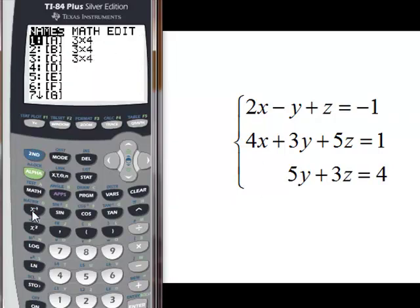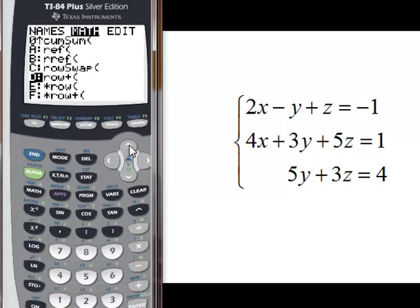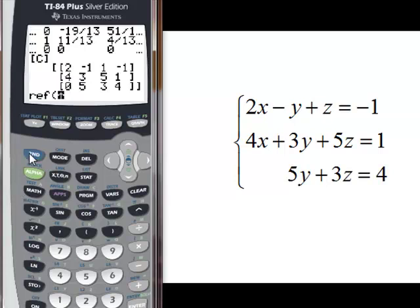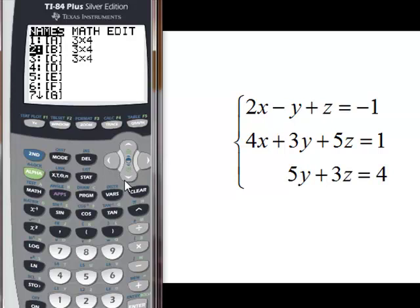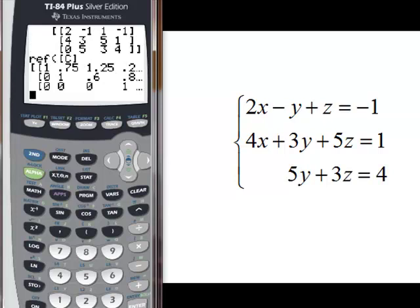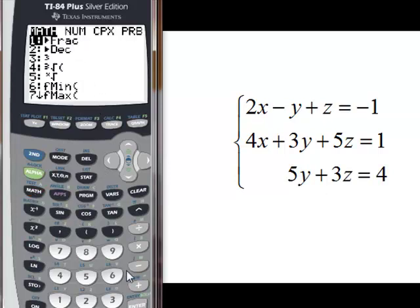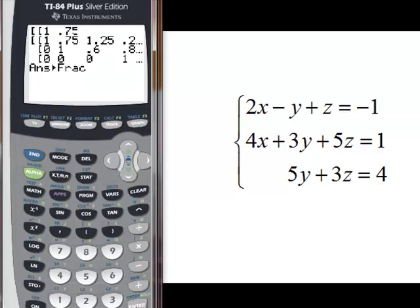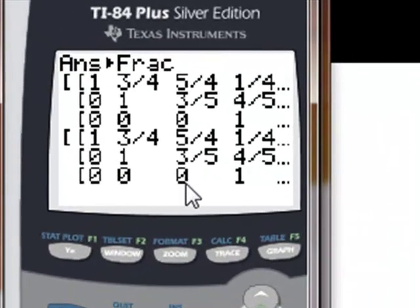I'm going to do the exact same thing, put it in row reduced echelon form. We'll look at what the answer comes out to be. This looks at first sight similar to what we had last time because there are some numbers over here. If we want them as fractions, we can do math, fraction, enter, enter, and we've got all our answers as fractions.